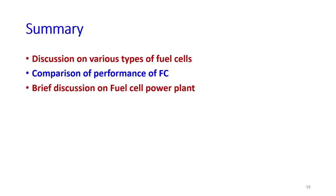To summarize: first we calculated the current, then used current density to calculate the required area. From the area and cell size (1 m² per cell), we determined the number of cells. Finally, dividing by 280 cells per stack gives approximately 3 stacks required to provide an output of 2 megawatt DC.